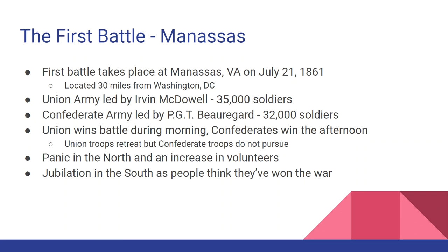The Confederate troops didn't follow because they were too disorganized — there was a real chance that could have been the only battle of the war had they marched the 30 miles to Washington D.C. After the battle, panic spread in the north, thousands volunteered, and the south celebrated, with ministers calling it like the second parting of the Red Sea. McDowell was relieved of duty, and George McClellan took over and began training the army in earnest.